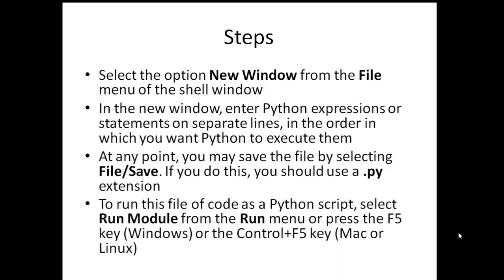After completing a program, if you want to run the code, go to the Run menu or simply press F5 in Windows, or Control+F5 on Mac or Linux. So you have to open a new window, write your code, save it, then press F5 or use the Run button. I will show this with an example.